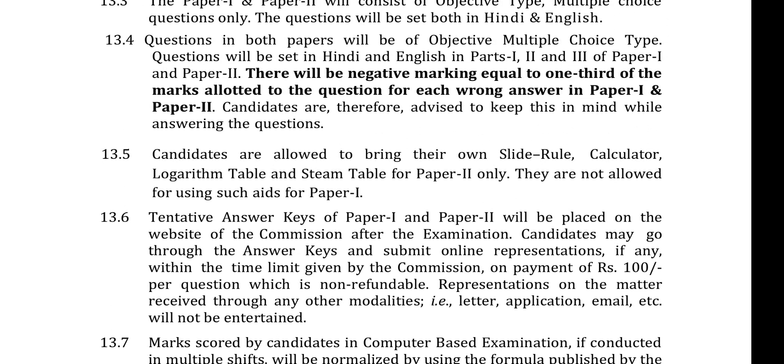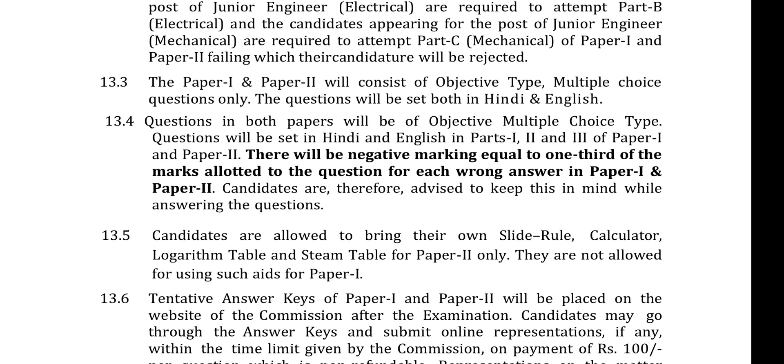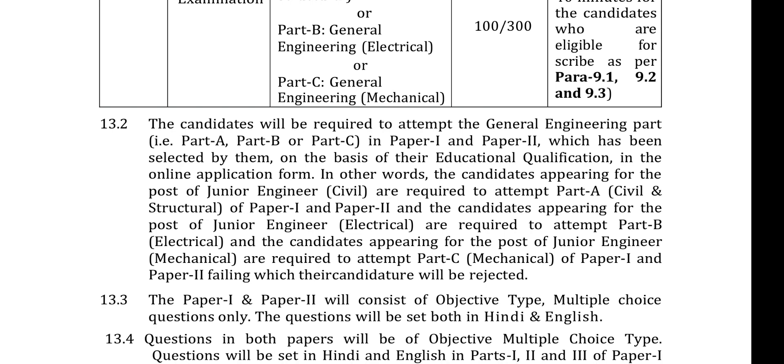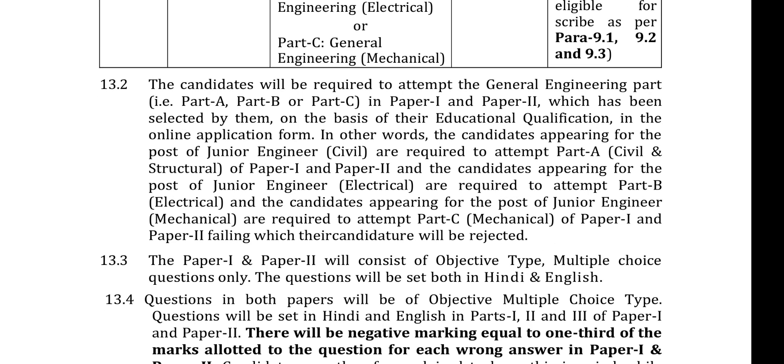The exam pattern is clear. Paper 2 allows a calculator, logarithm table, and stat table. Paper 1 allows a calculator. For final selection, candidates will be required to attend the general engineering part A, B, and C — Paper 1 and Paper 2 — based on their educational qualification. Paper 2 can be civil, electrical, or mechanical — you can choose your subject paper.